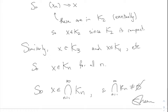The moral of the story: this fact about nested compact sets is not all that important — we're not going to use it often the way the nested interval property is. It's more of a curiosity. But the moral of the story is that a lot of the things you think are true about closed intervals are actually true of any compact set.